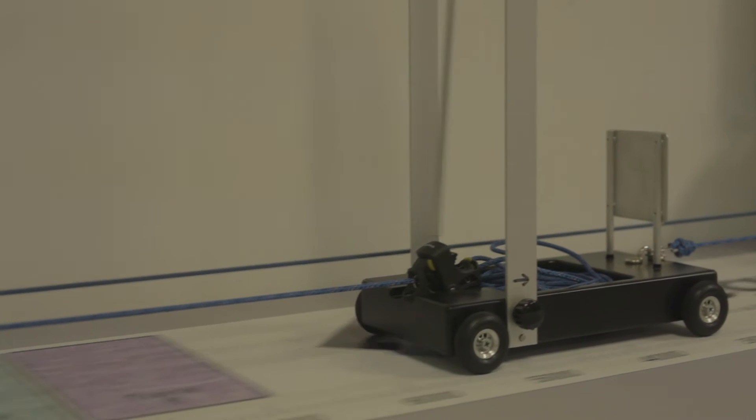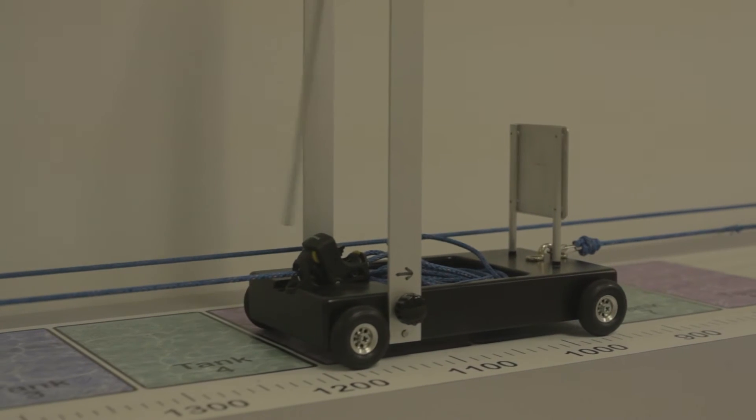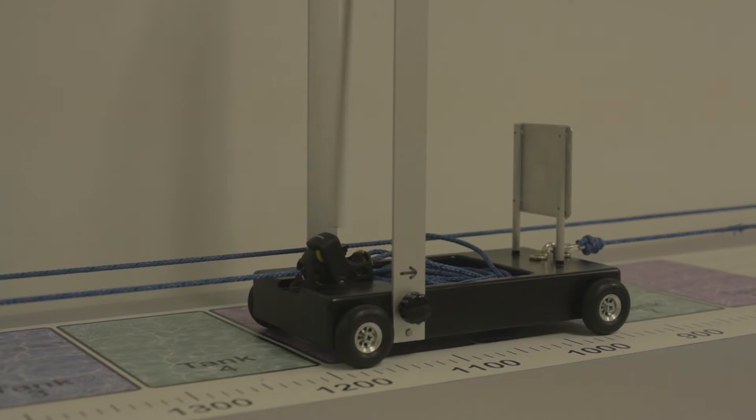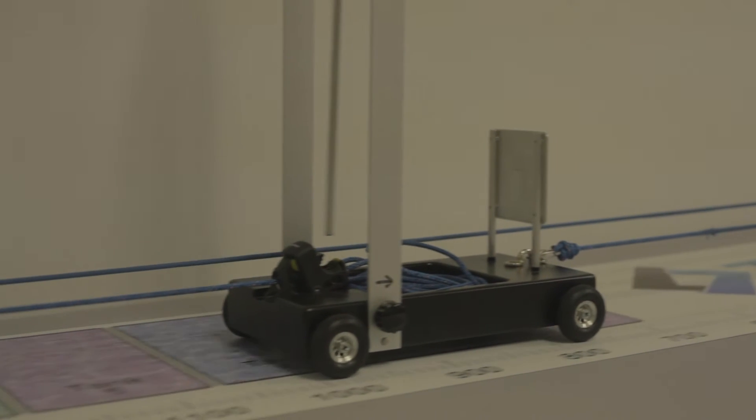This lab model shows excessive sway which results from trapezoidal moves. A technique known as input shaping is used to execute the same moves while eliminating nearly all of the load sway.